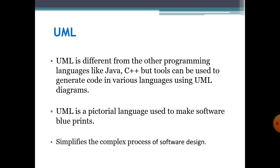UML does not give us the internal details of what is inside a function — it does not give us implementation-level details, what we also call the developer's view. In short, UML is a pictorial and graphical language in which a software's blueprints, skeleton, and architecture or structure are developed. You can say that UML is basically an approach which simplifies the complex process of software design.